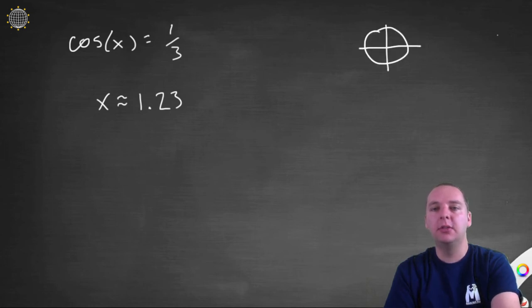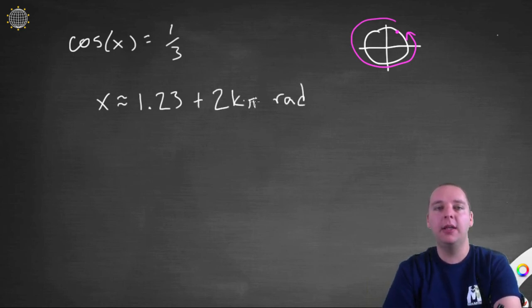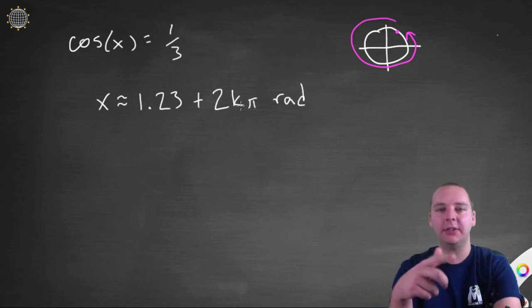But we also have some other things to consider though. On the one hand, we have to also include any additional 2 pi radians to that. So, we'll have 1 point 2 3 plus 2 k pi radians, where k is any integer.